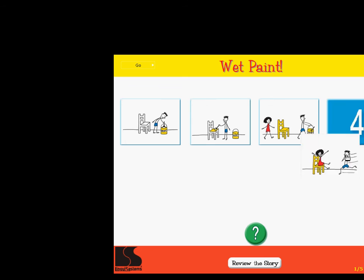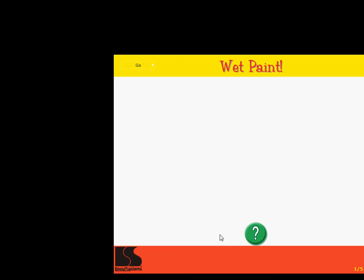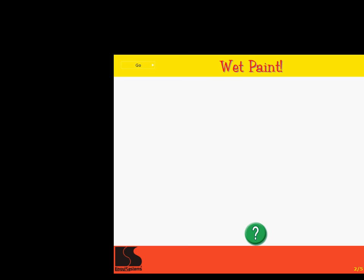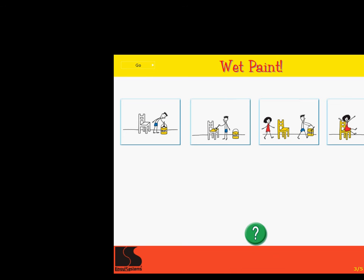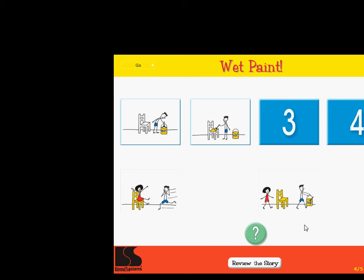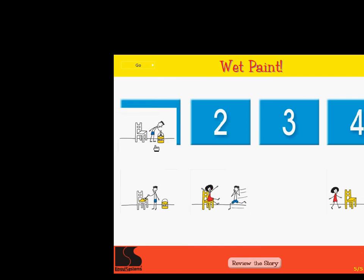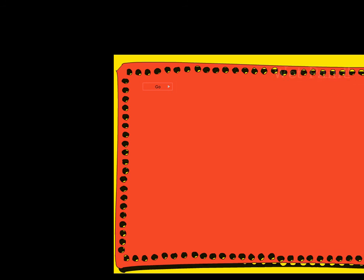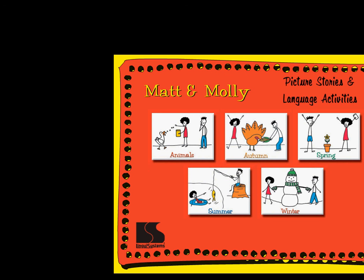Click on each picture and drag it to its place in the story. Click on the green button when you are finished to see if you are correct. Put the story in order. Correct! Put the story in order. Correct! Put the story in order. Super! Right on! Click on a theme.